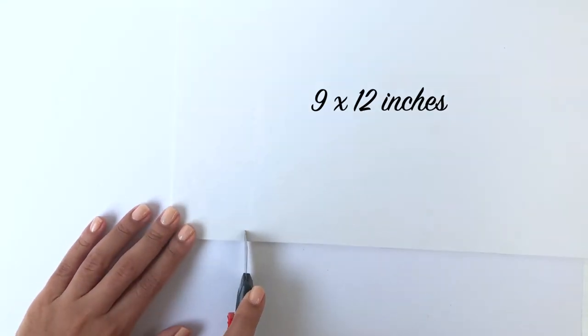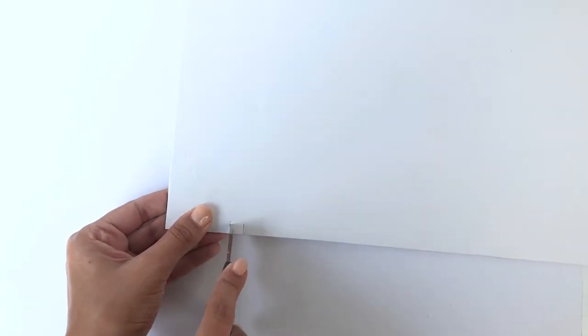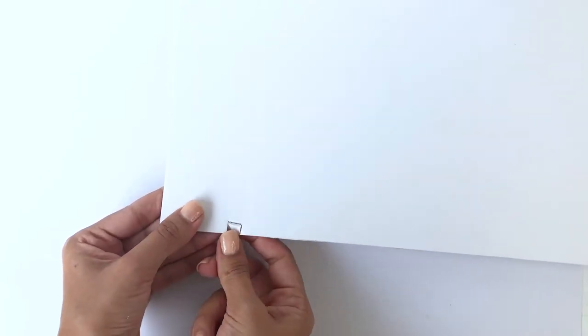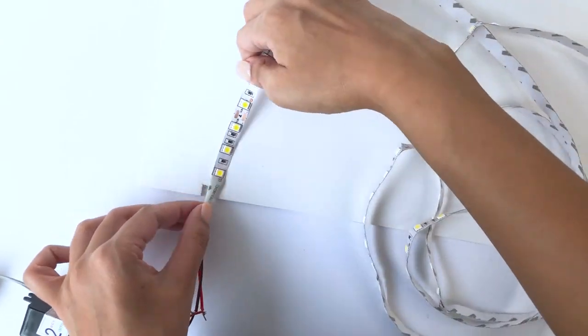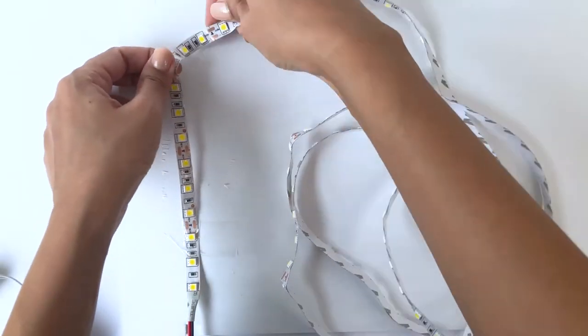Take another piece of the sunboard in the given dimensions and cut a tiny little slit at one of the edges. Now use some transparent tape to stick the strip of LED lights all across the board just like this.